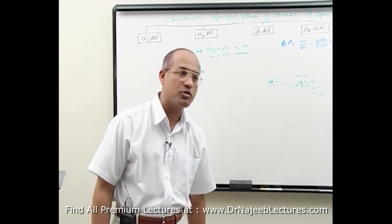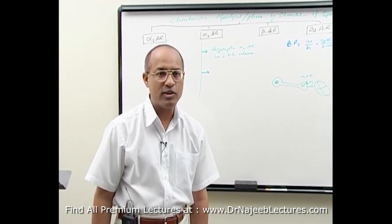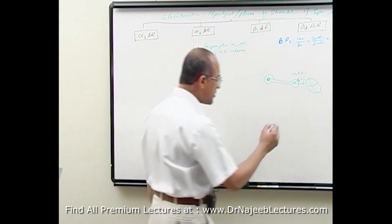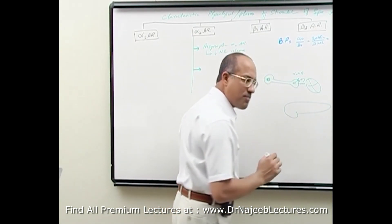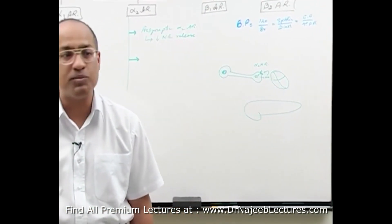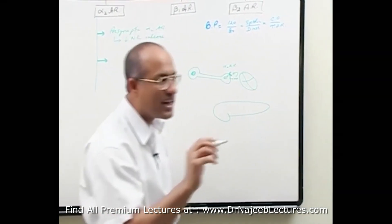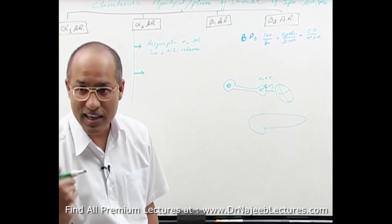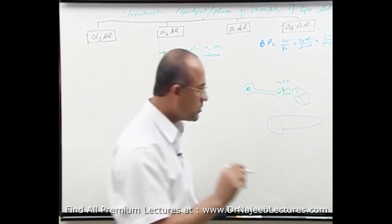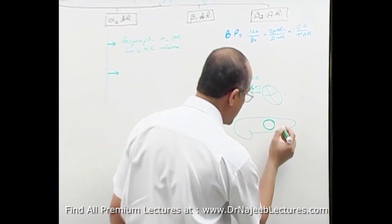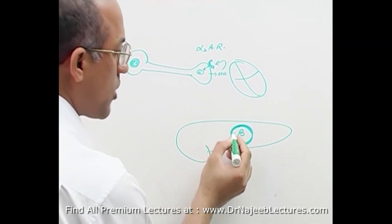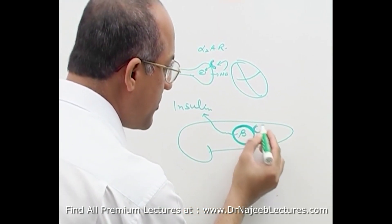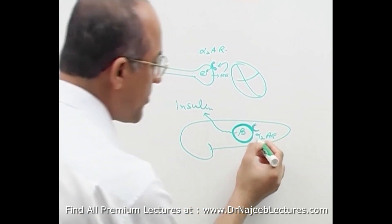Alpha 2 adrenergic receptors are also present on insulin-producing cells. Insulin is produced by which cells? In the pancreas there are islets of Langerhans, and the beta cells of the islets of Langerhans have alpha 2 receptors. This beta cell is normally responsible to produce insulin, but this cell is loaded with alpha 2 adrenergic receptors.